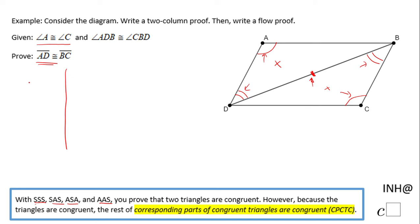I'm going to start my proof by doing the two columns. On the left side I'm going to put statements and on the right side reasons. I'm going to start with something that is given - I can start with either one. Angle A congruent to C, and this is given. The next statement: angle ADB congruent to angle CBD, also given.